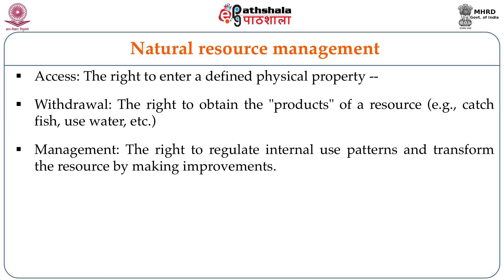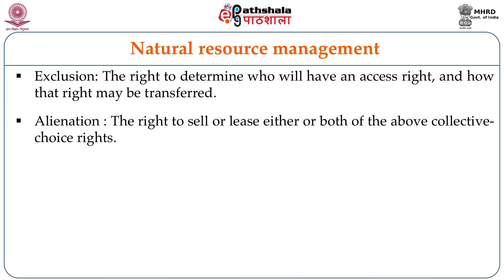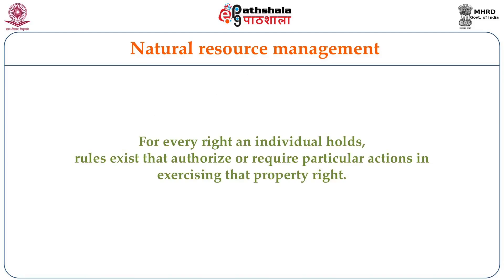Management is the right to regulate internal use patterns and transform the resource by making improvements. Exclusion is the right to determine who will have an access right and how that right may be transferred. Alienation is the last and most important of the rights — it is the right to sell or lease either or both of the above collective choice rights. For every right an individual holds, rules exist that authorize or require particular actions in exercising that property right.